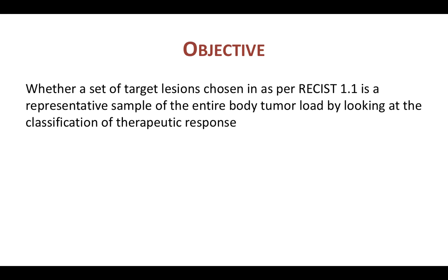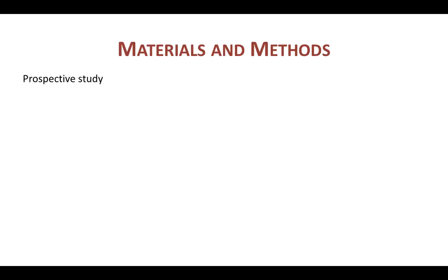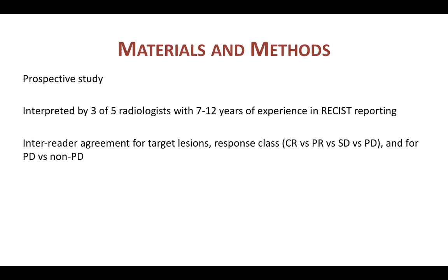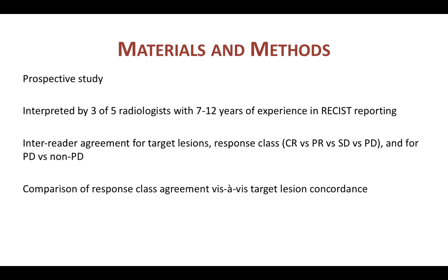The objective of the study was to see whether the set of target lesions chosen as per RECIST 1.1 is a representative sample of the entire body tumor burden by looking at the classification of therapeutic response. This was a prospective study in which all images were interpreted by three of five experienced radiologists in RECIST reporting. The study looked at inter-reader agreement for target lesions and also for response class — whether it was CR, PR, stable disease, or PD — and importantly whether it was progressive disease versus non-progressive disease.